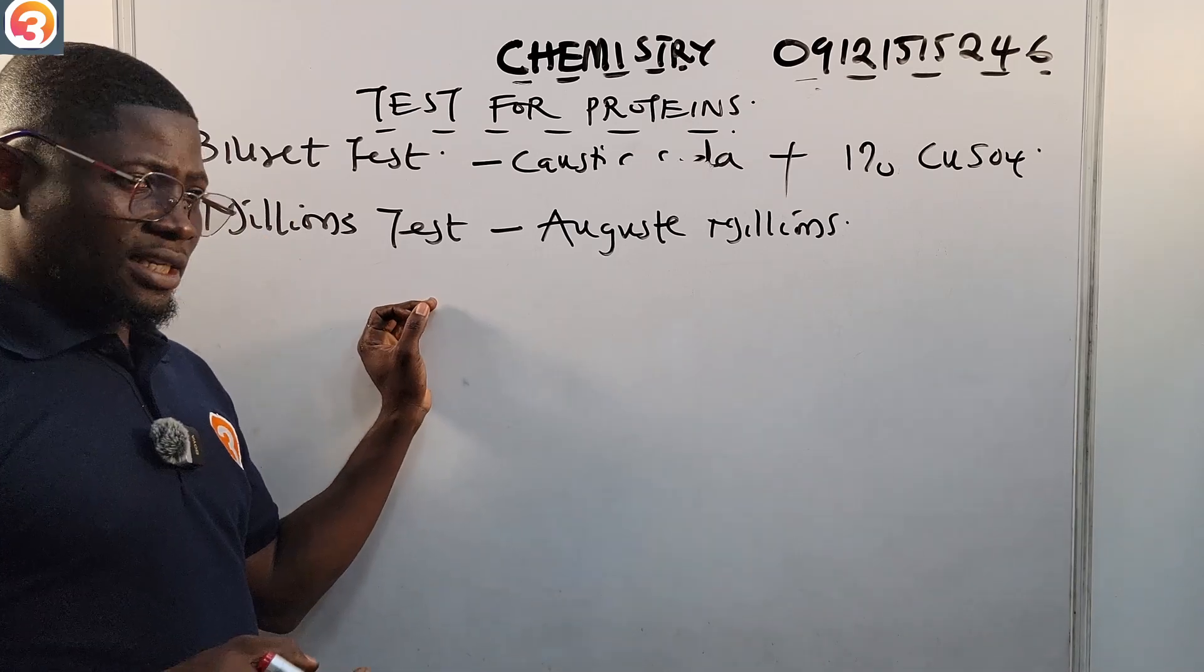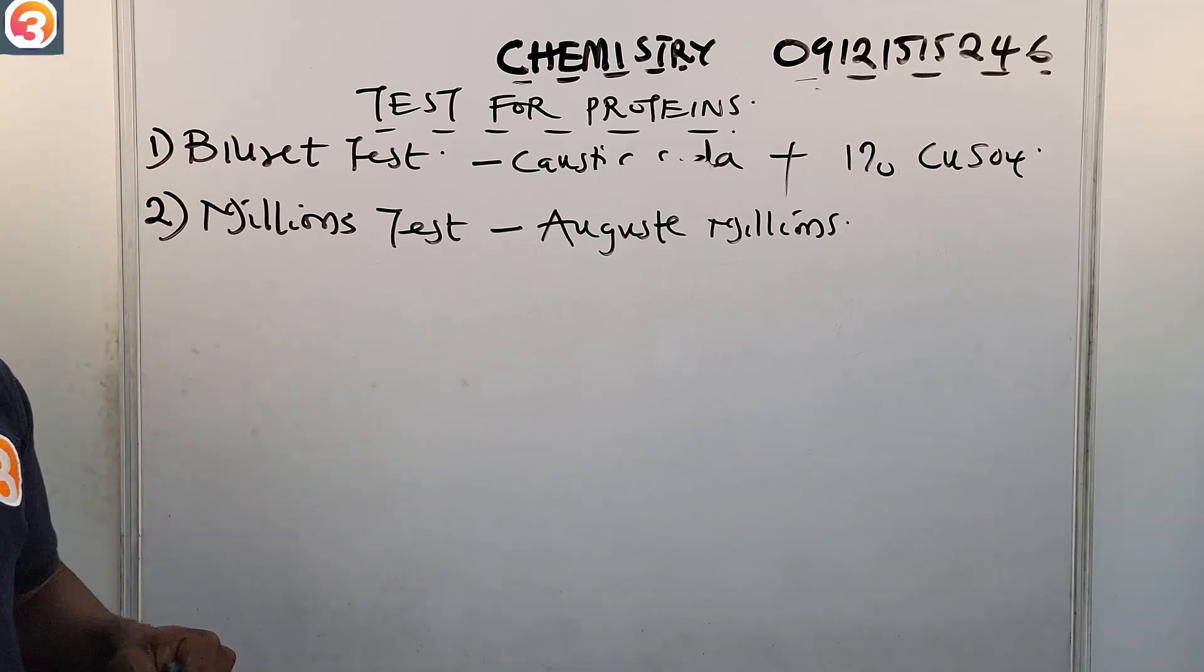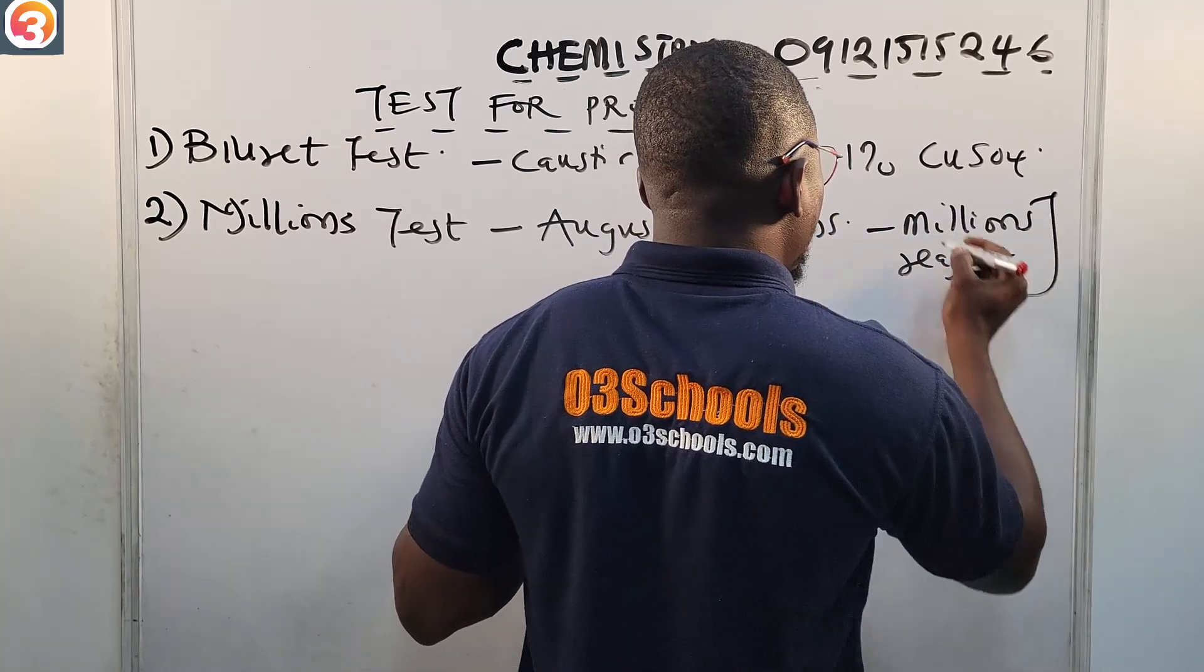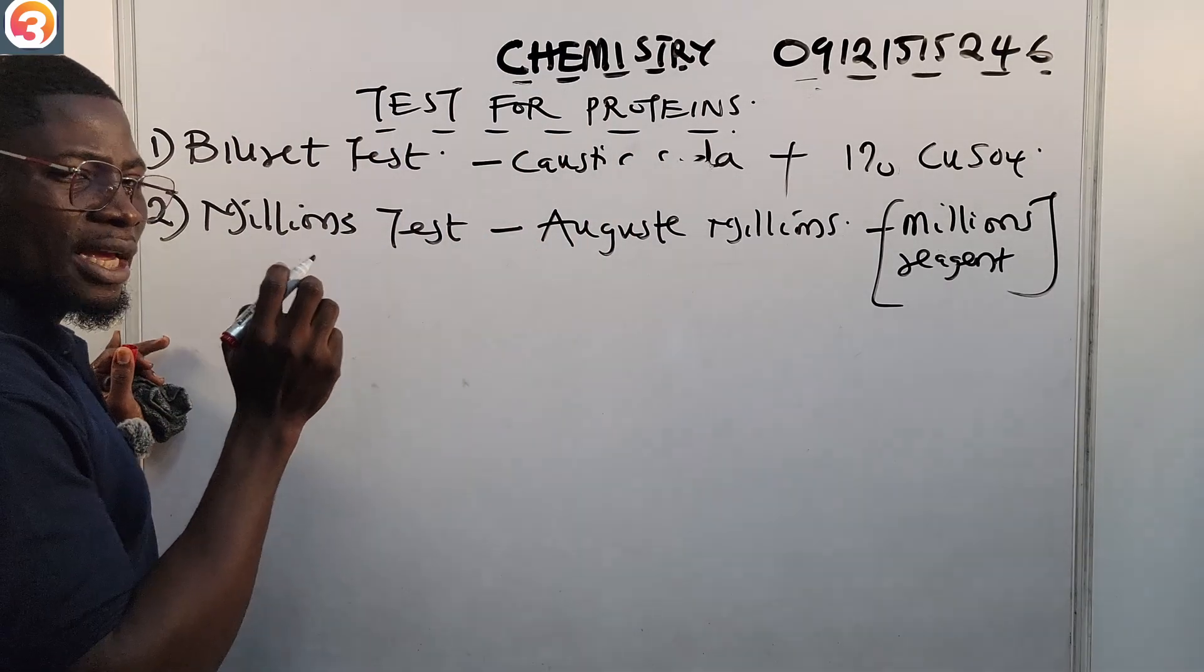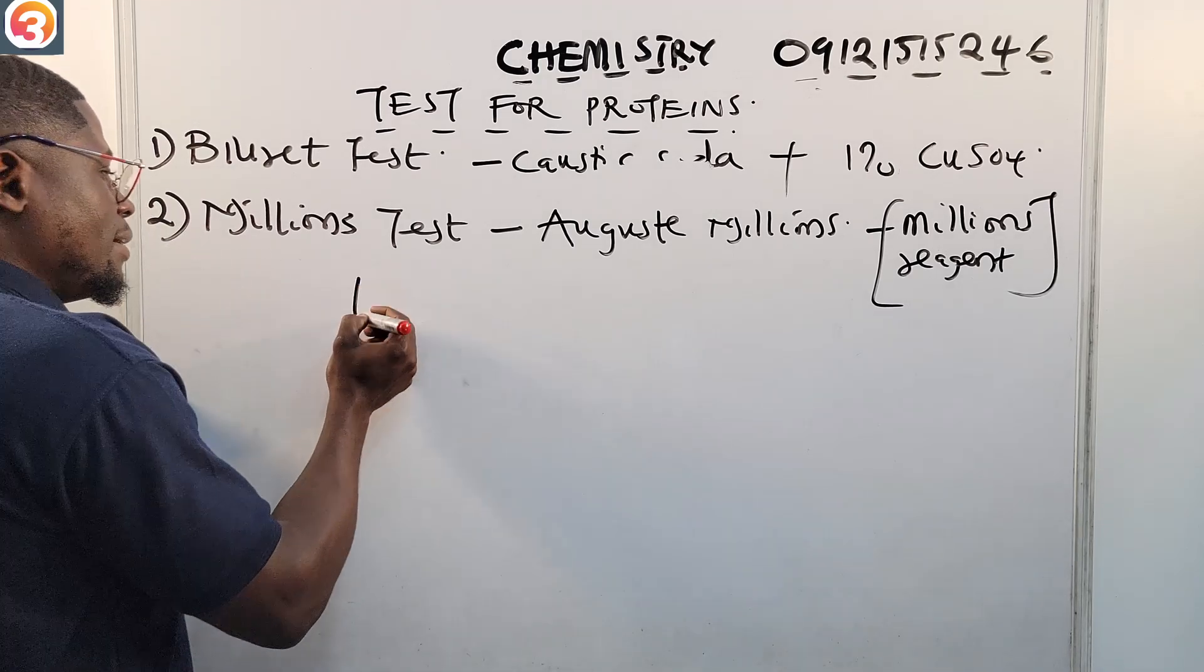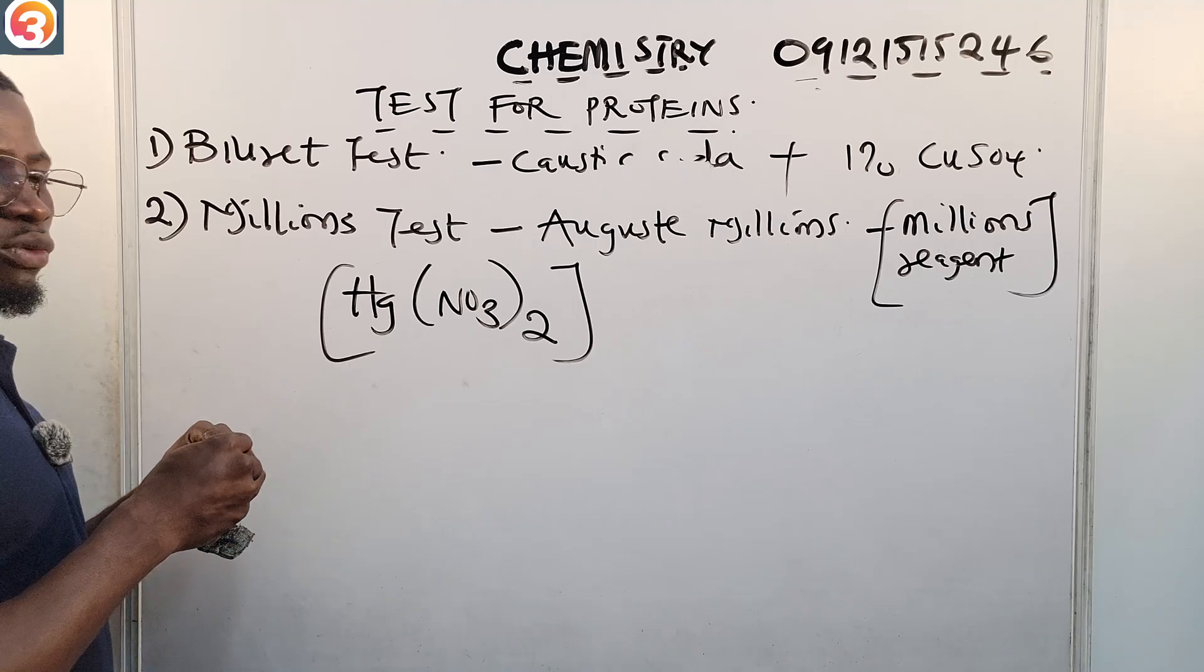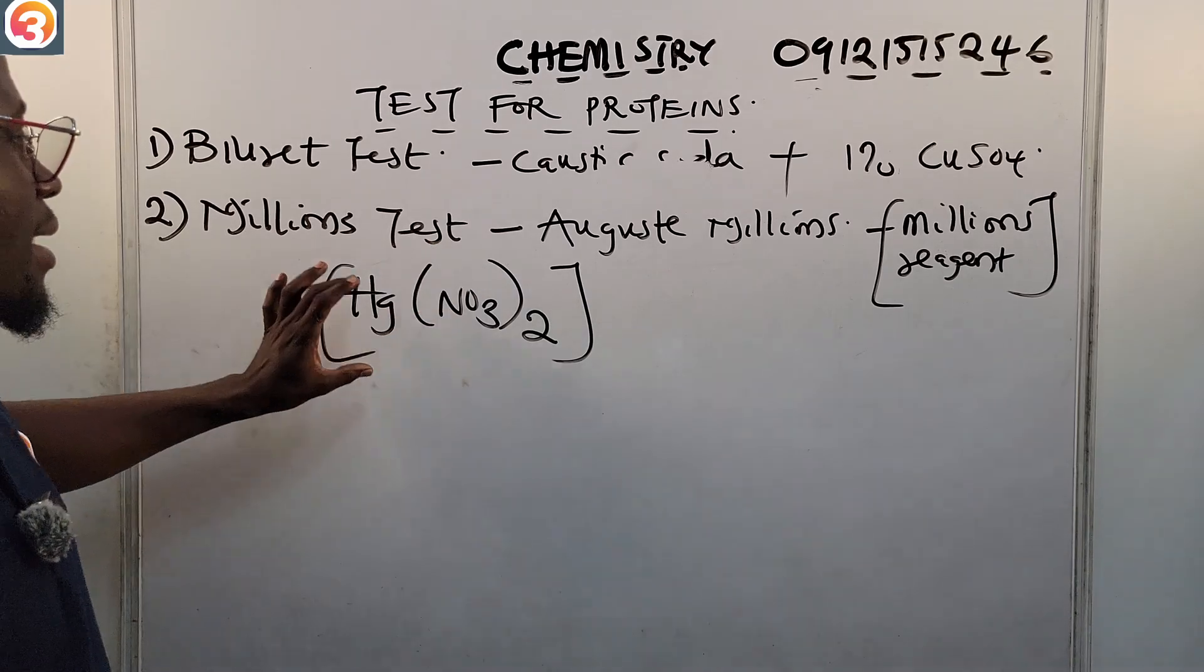His name was August Millon, and of course he was the one that proposed this test. So it was credited to him, his name was August Millon. So the Millon's test, what you use is the Millon's reagent, and this Millon's reagent is metallic mercury in solution with trioxonitrate(V).